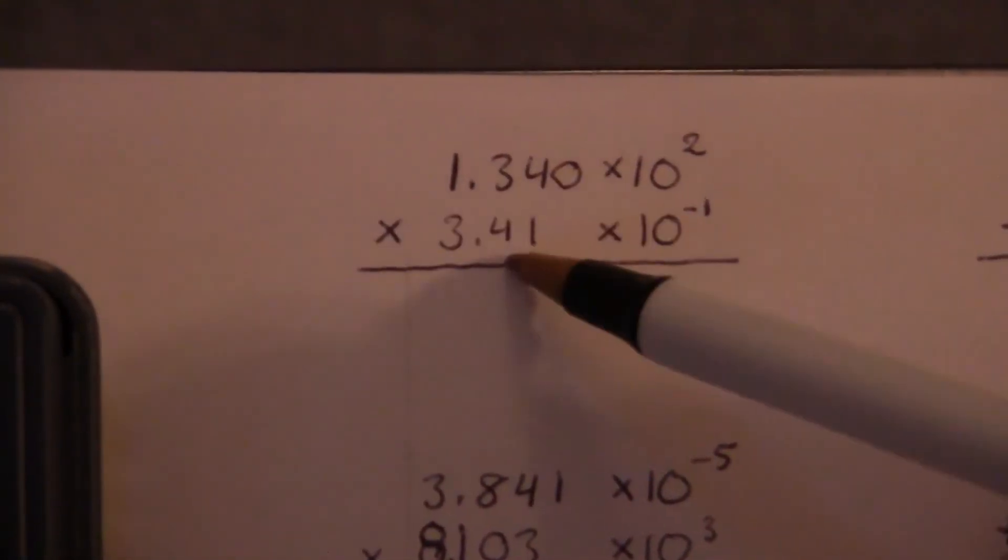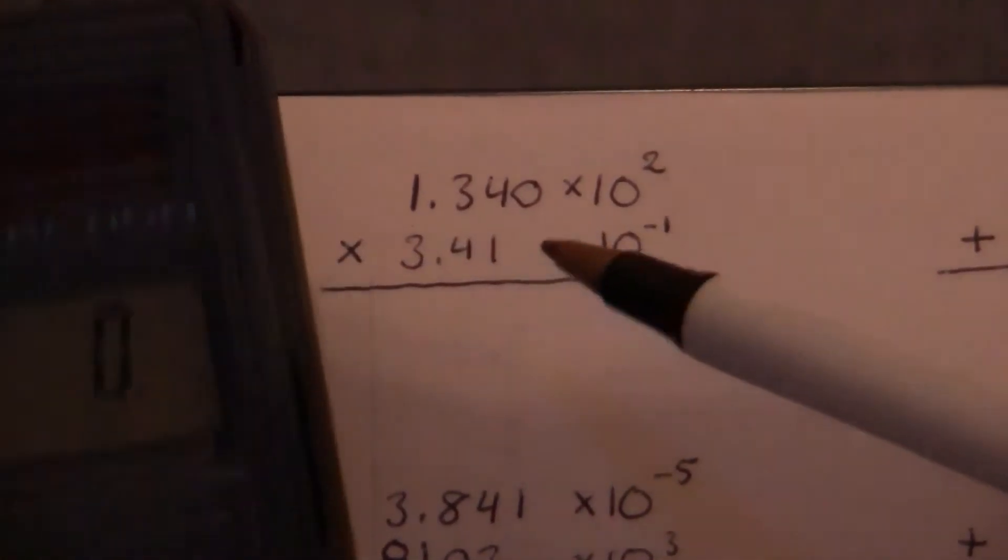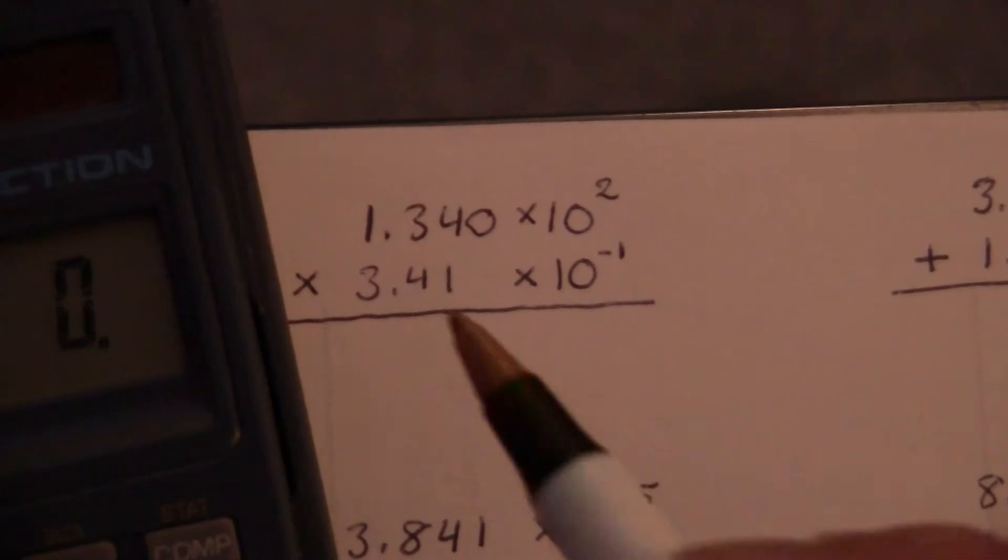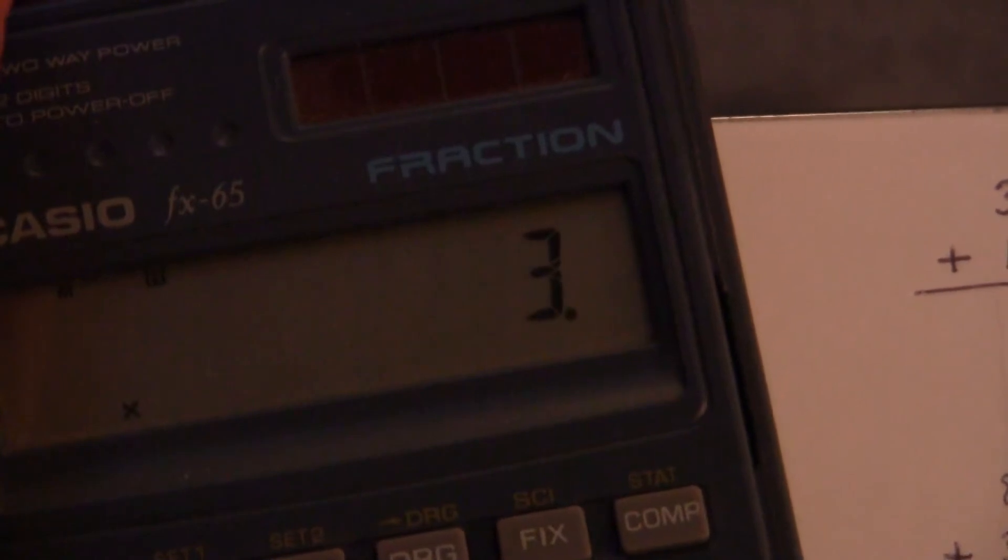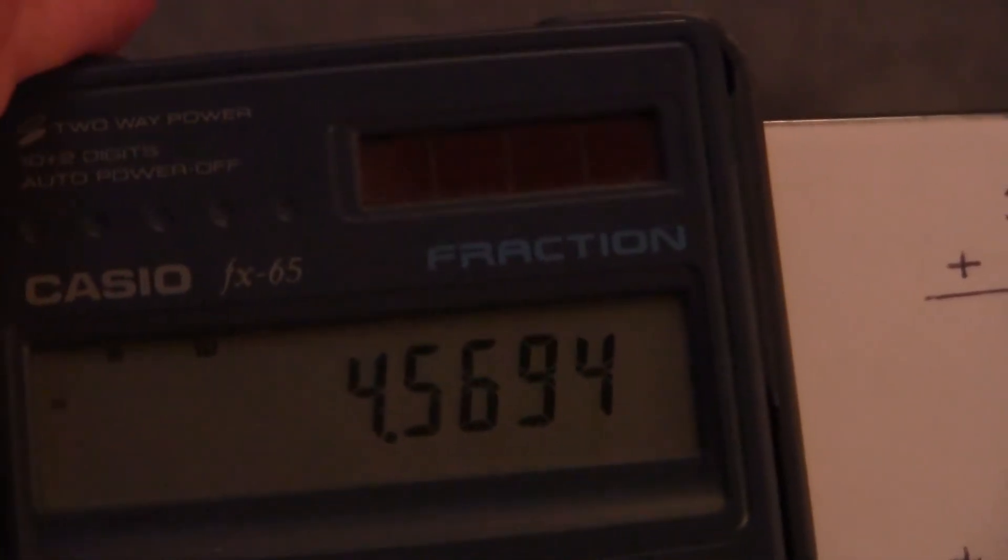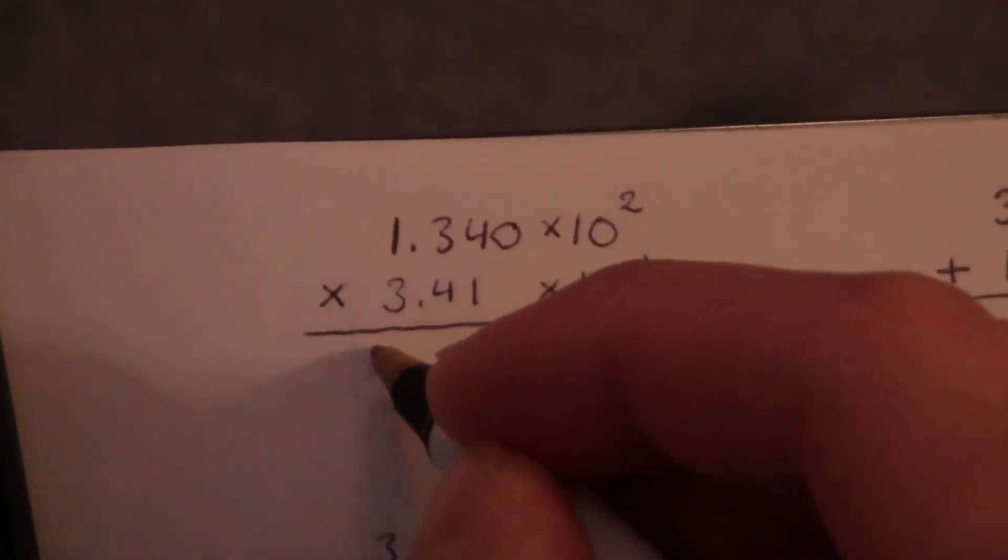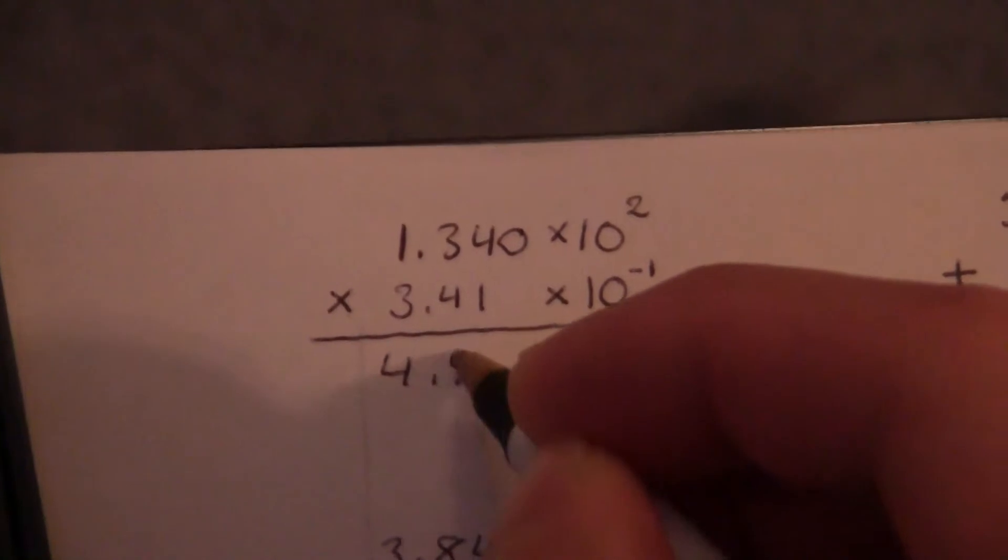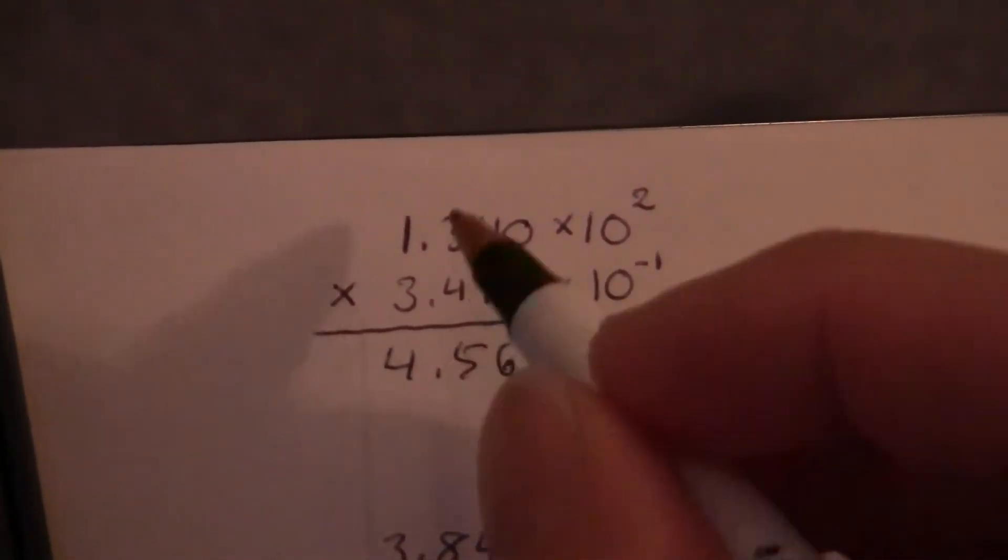So first the numbers. We're multiplying so we're going to just multiply those two numbers 1.340 times 3.41 and that gives us 4.5694. So we'll go ahead and put that here and then now we're done with this part.